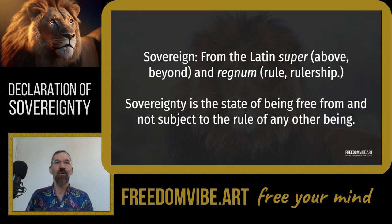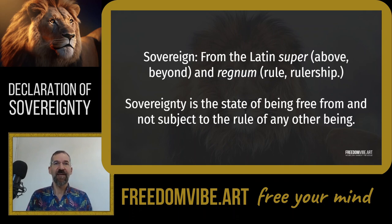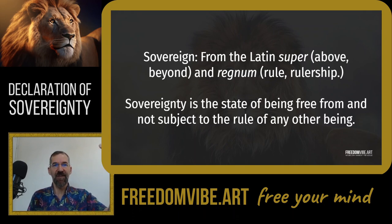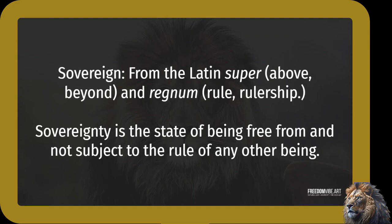Now let's understand the second word: sovereignty. Sovereignty comes from the word sovereign, which again comes from the Latin. The words have changed a little bit over time — probably intentionally — but sovereign comes from two Latin words: 'super,' meaning above and beyond, and 'regnum,' meaning rule or rulership. So sovereignty simply is the state of being free from, or not subject to, rule. In other words, you're above rule, you're beyond rule, you're not subject to being ruled by others.